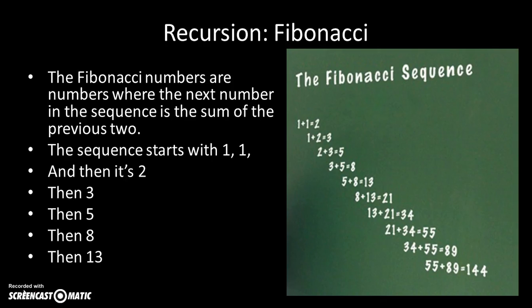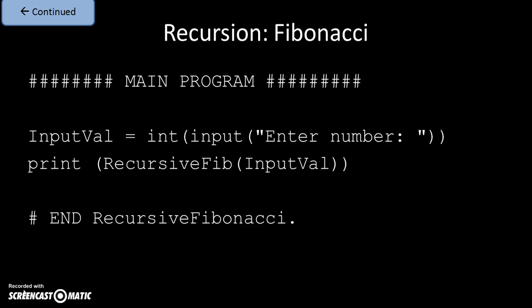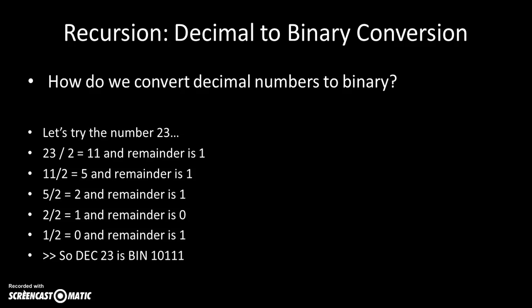Fibonacci in Python looks like the pseudocode. recursive_fib: if n is 1 or 2, just return 1; else return recursive_fib(n - 1) + recursive_fib(n - 2). And we call it exactly like the factorial program.